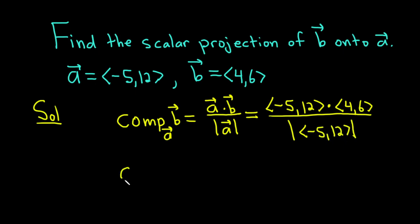So the component of B along A equals, for A dot B, to compute the dot product you multiply the corresponding components then add. So negative 5 times 4, plus 12 times 6.